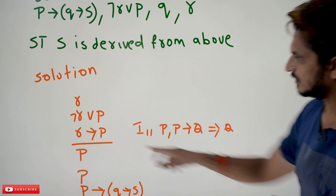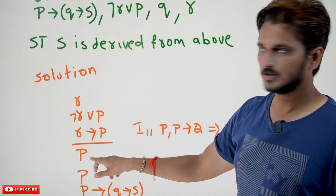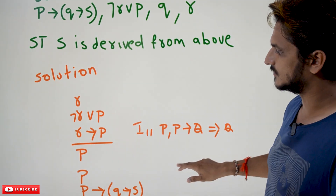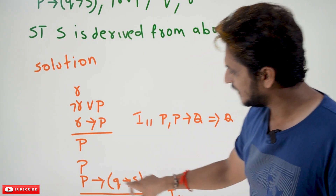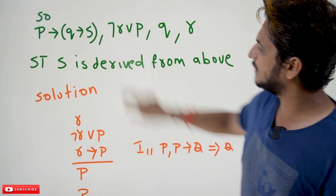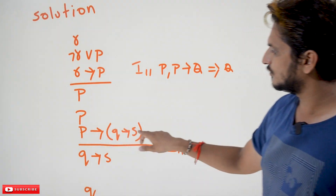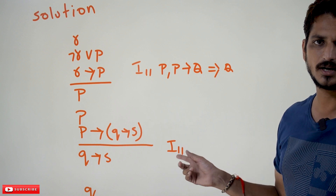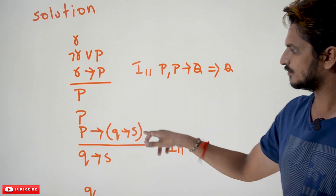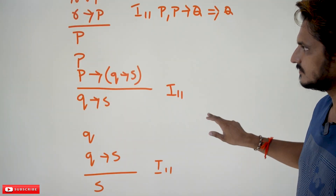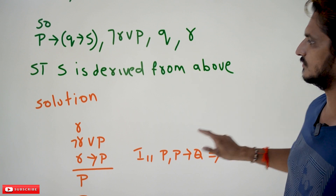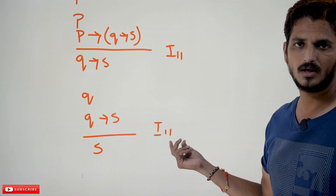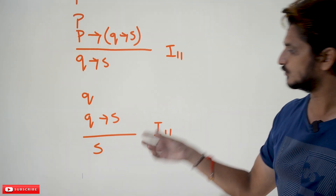P implies Q can be written as Q. So from the set of premises, we got P. Using premise P and P implies Q implies S, we can write P, P implies Q implies S as Q implies S. Then Q, Q implies S can be written as S using the same formula I-11. Finally, from the given set of premises, we are deriving S.